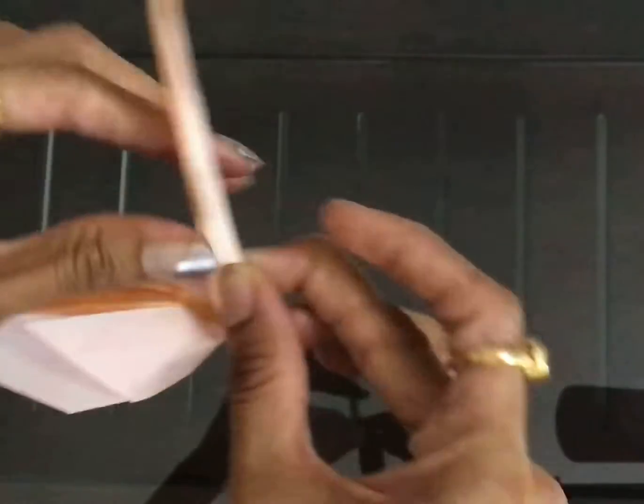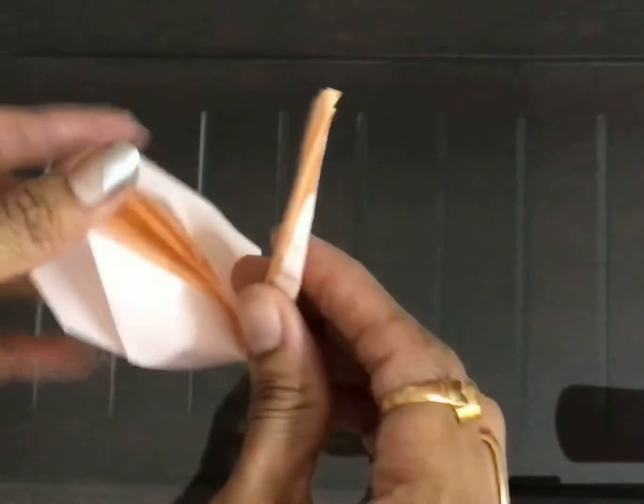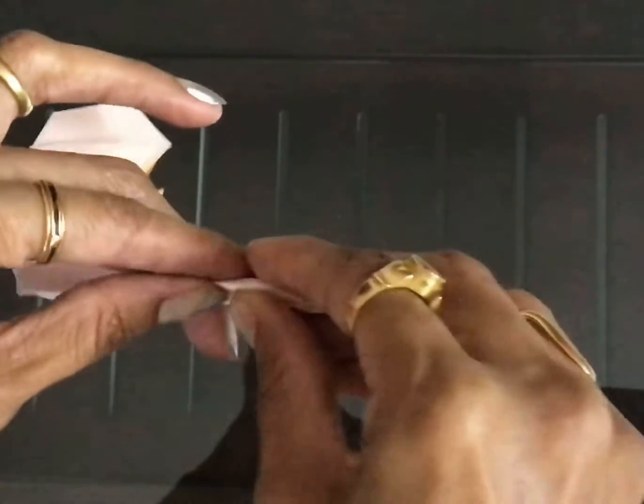Now create the neck like this and the head and the beak. You can fold it by doing the inside reverse fold.